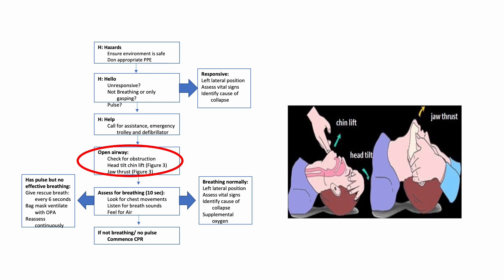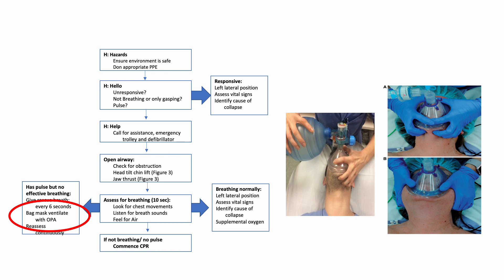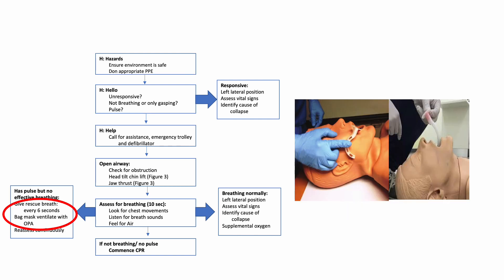If not breathing and no pulse, commence CPR immediately. If the patient has a pulse but no effective breathing, do gentle mask ventilation and give rescue breaths every 6 seconds. The picture on the right depicts two techniques of effective mask ventilation: the one-hand C and E technique, and the two-hand technique. An oropharyngeal airway can also facilitate mask ventilation, and the pictures depict the appropriate measurement and insertion technique for an OPA.